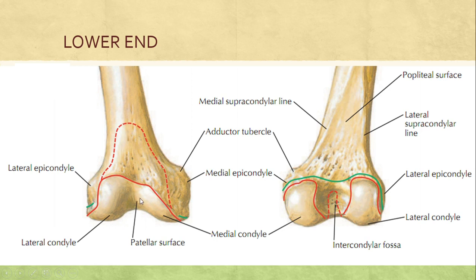Anteriorly the two condyles are connected, and posteriorly the two articular surfaces are separated by the intercondylar fossa or intercondylar notch, which is joined to the shaft by the intercondylar line. On the lateral side of the lateral condyle there is a prominence called the lateral epicondyle, and on the medial side of the medial condyle there is a prominence called the medial epicondyle. Just posterior to the medial epicondyle is an elevation called the adductor tubercle, where the adductor magnus is attached.